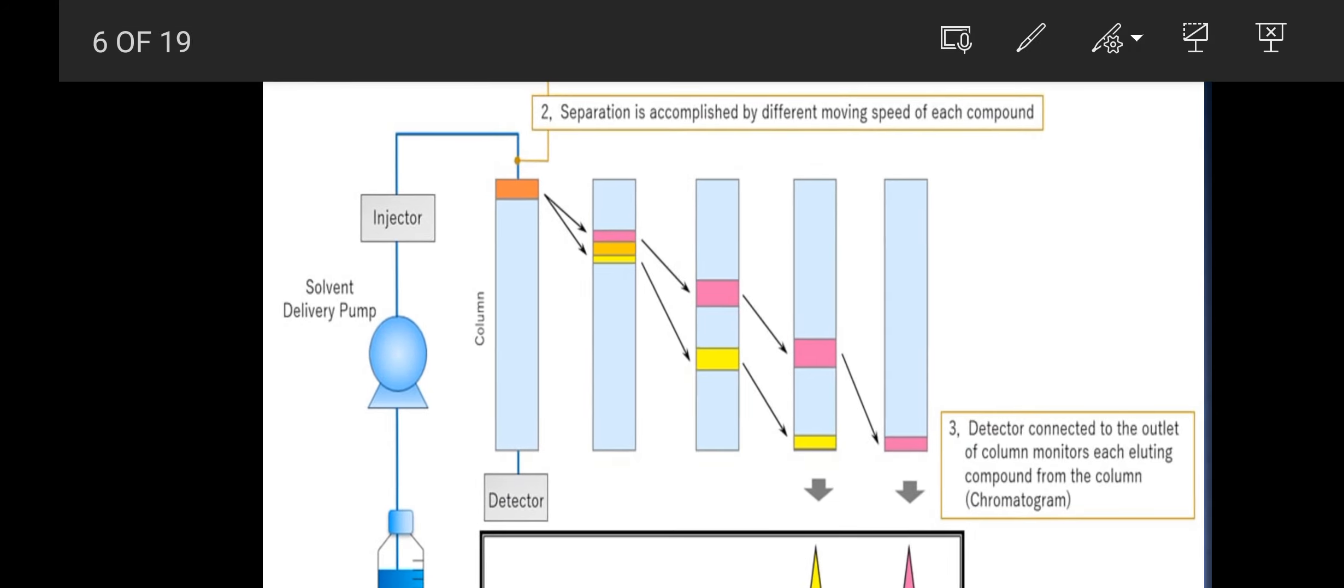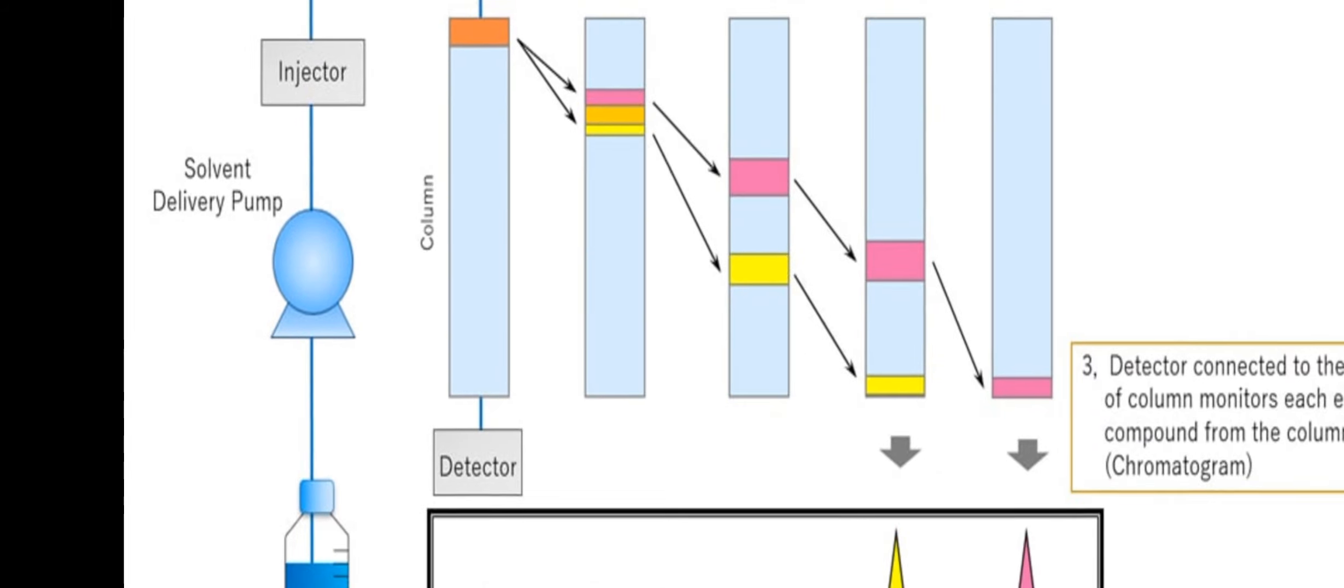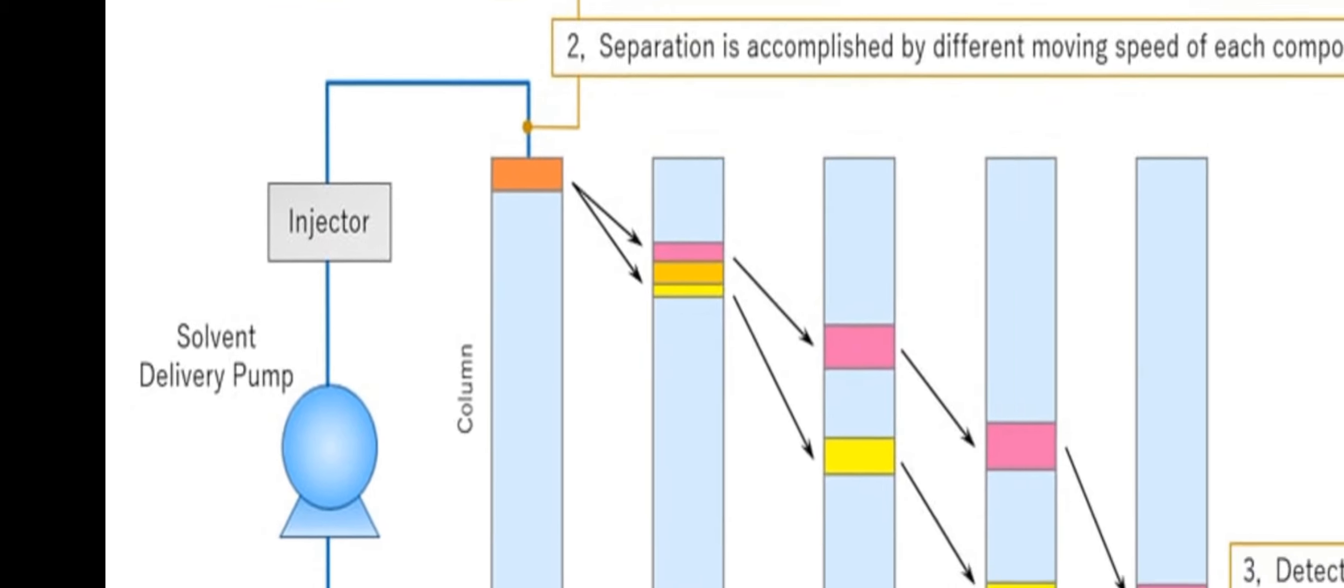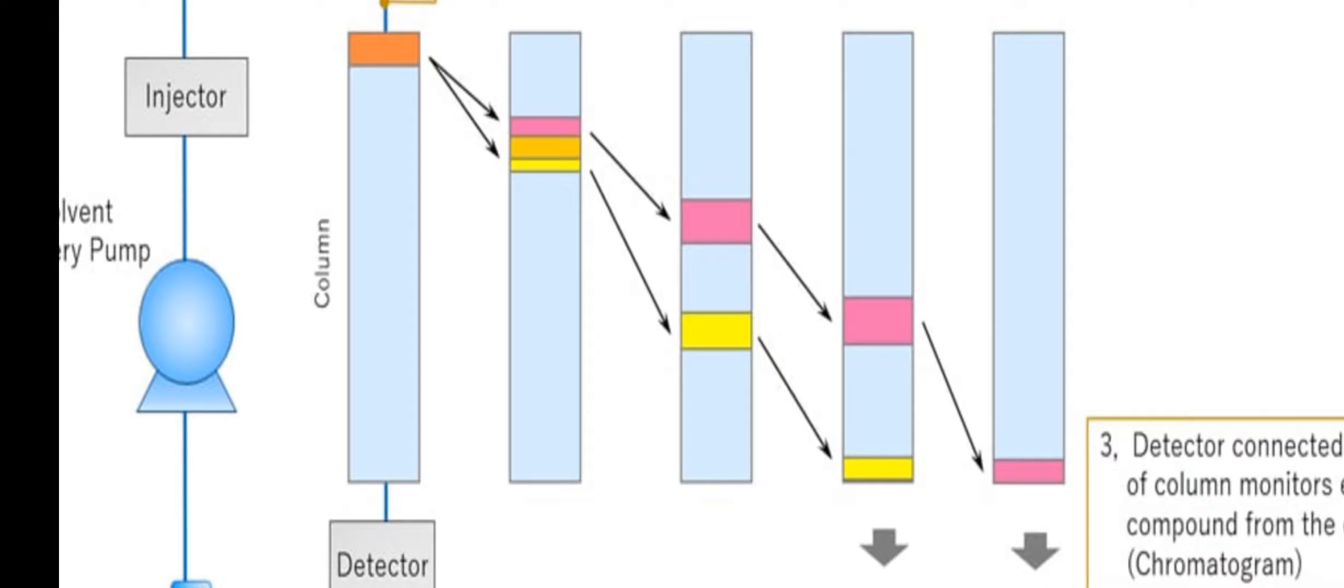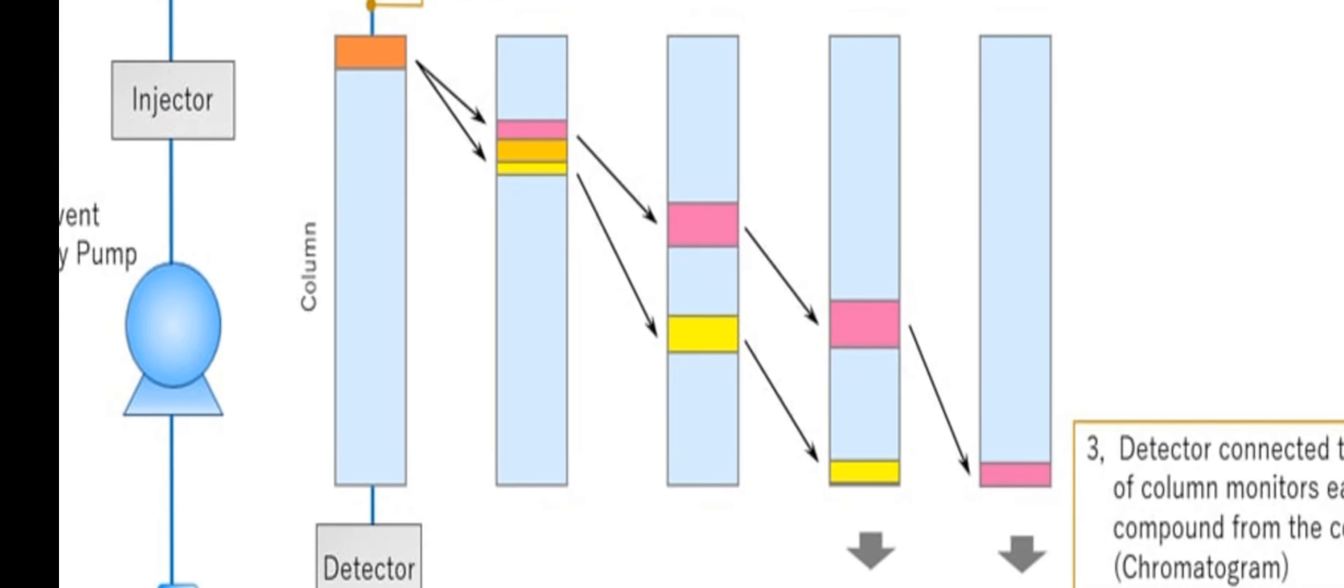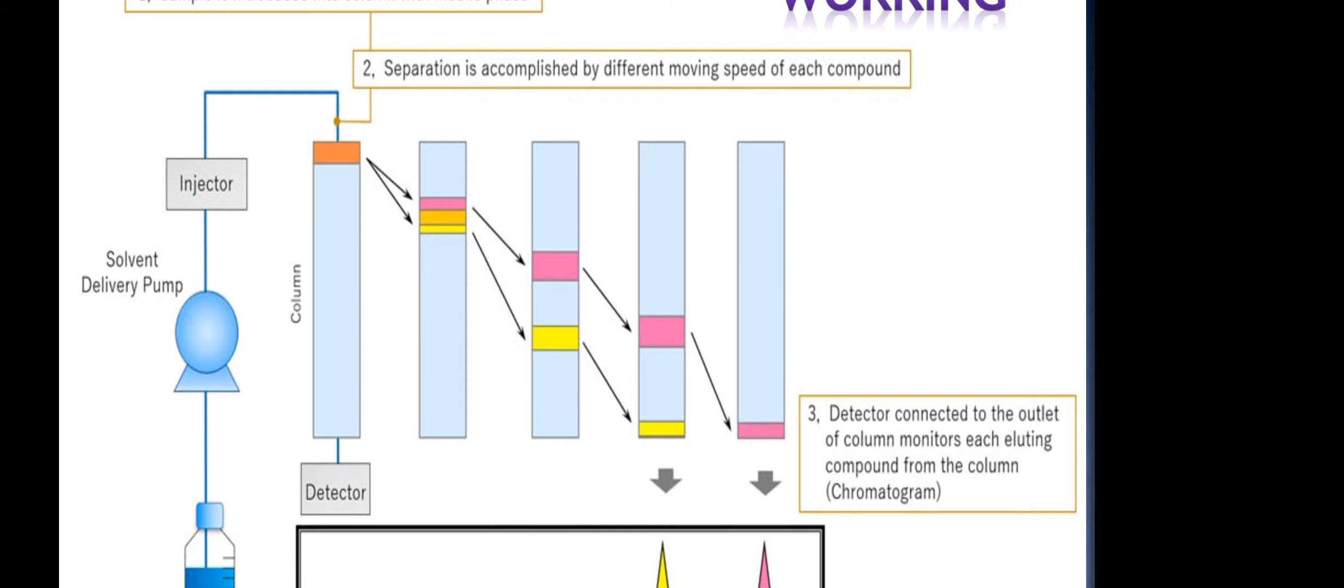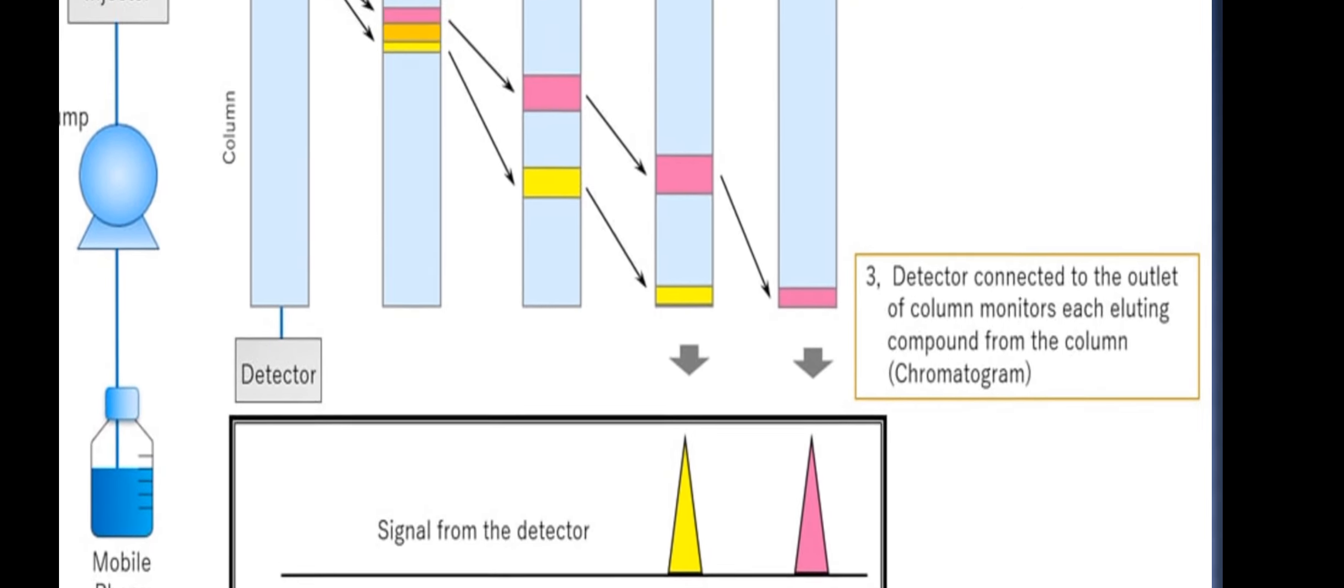Let's discuss about the working of the high performance liquid chromatography. First, the sample is introduced into the column with the mobile phase. Second, separation is accomplished by different moving speed of each component. We use the mobile phase and deliver it by the pump which generates enough pressure and in the injector we inject the sample. This sample is separated by high pressure through the column. The column consists of porous material which absorbs the different components of the solvent and the sample. And the detector detects the component. Third, detector connected to the outlet of column monitors each eluting compound from the column chromatogram. This is basically the chromatogram which is plotted against the time.